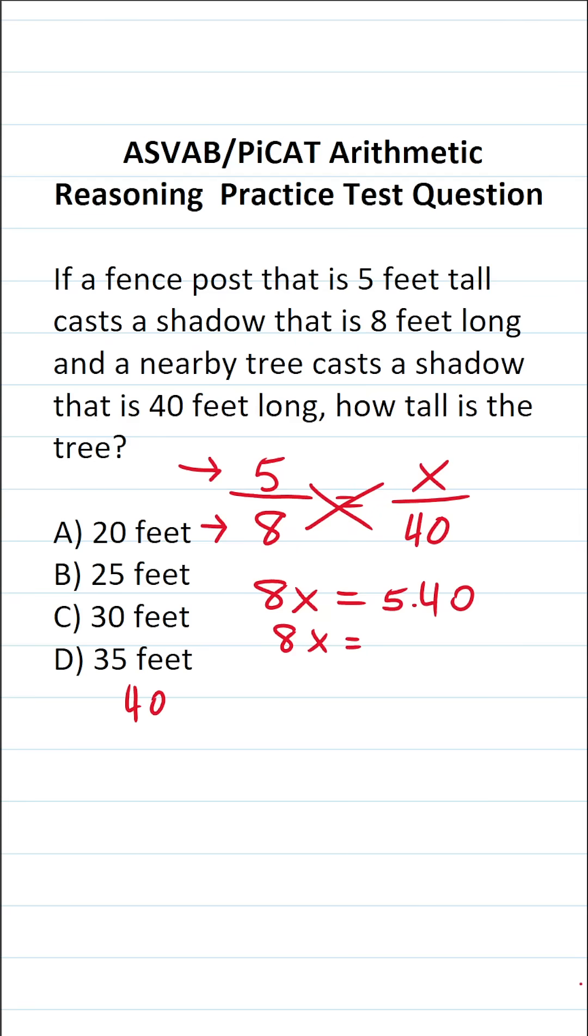Again, we have 40 times 5. 0 times 5 is 0. 4 times 5 is 20. So this becomes 8x equals 200.